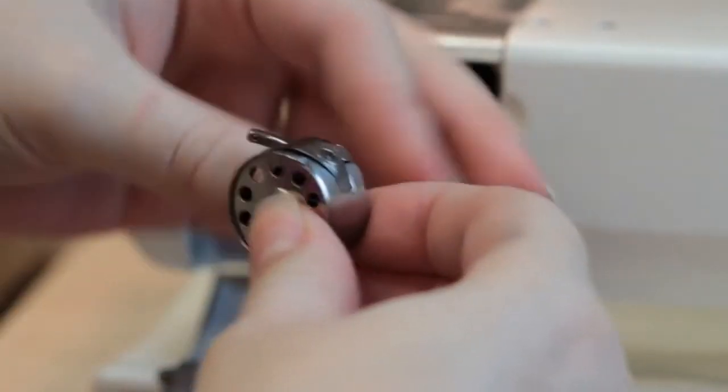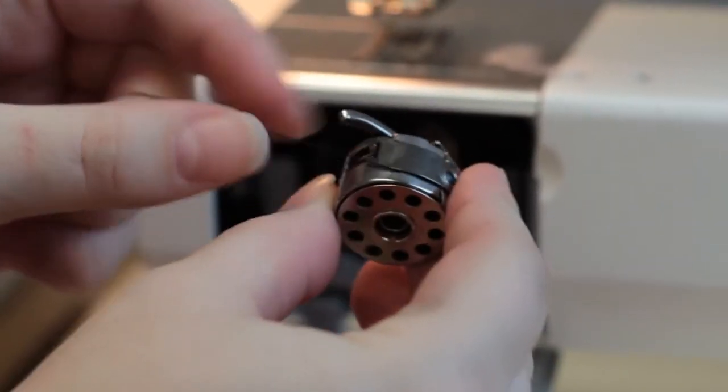Pull the thread around to the left into the mechanism on the bobbin case until the thread pulls through easily.